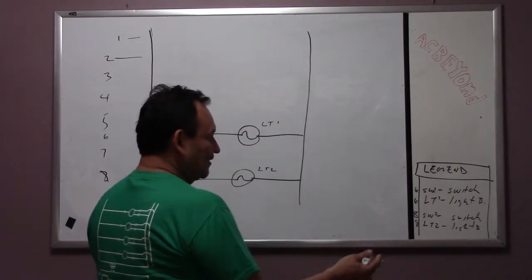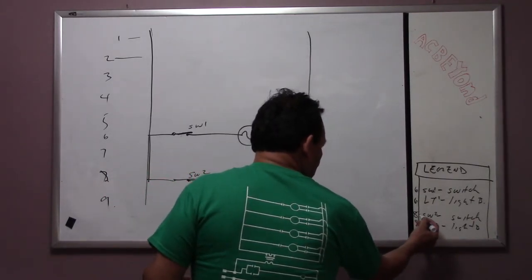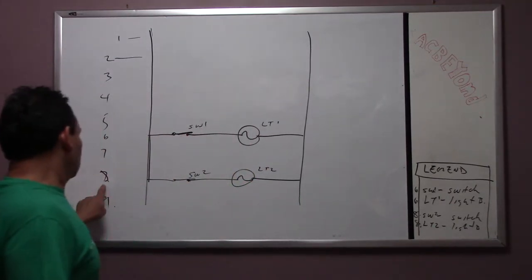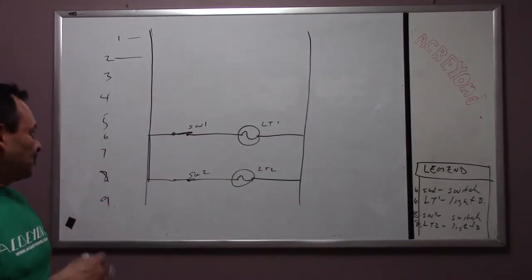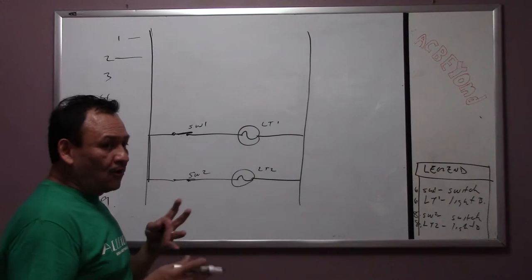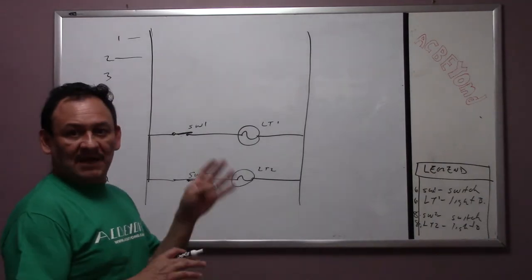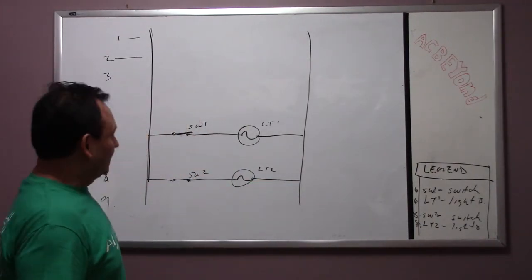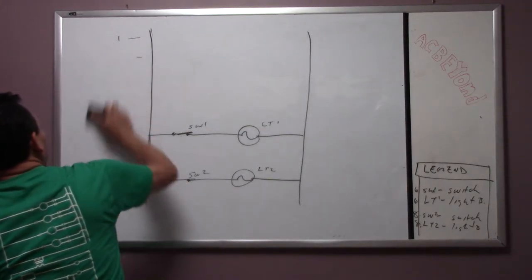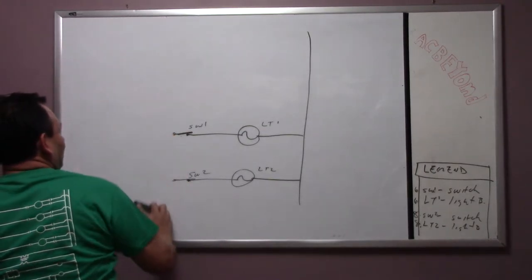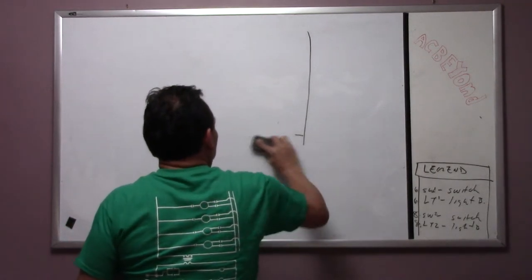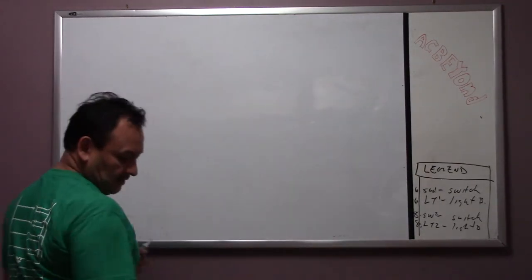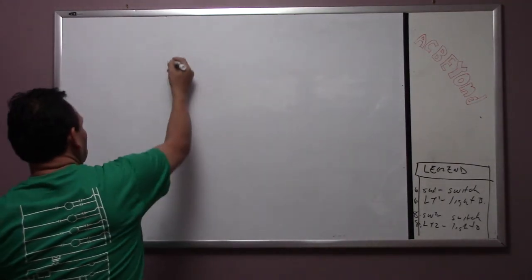If you want to find out where switch two is, you're going to look at it and it's going to say eight. This is pretty much how the legend works — not all wiring diagrams have a legend, but some of them do have numbers. Now that we're done with that, we have to dig in a little bit.